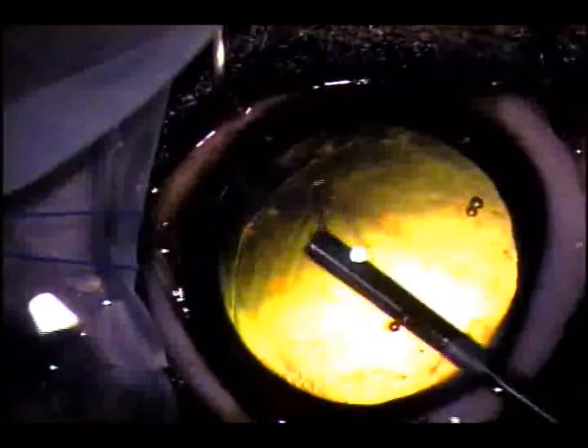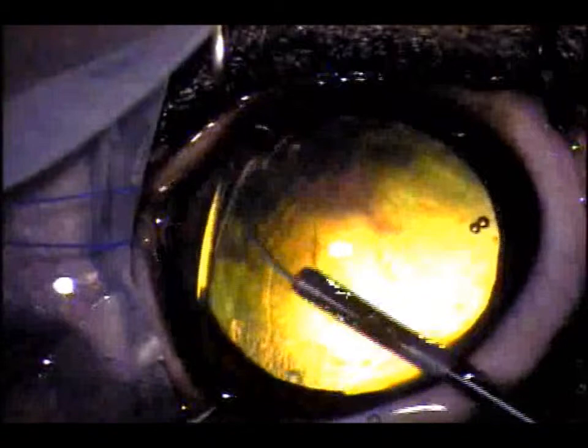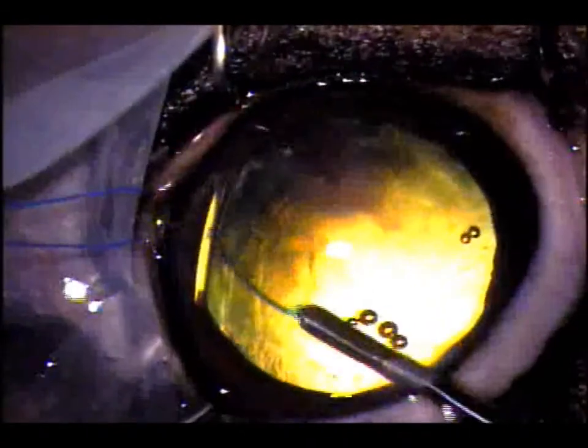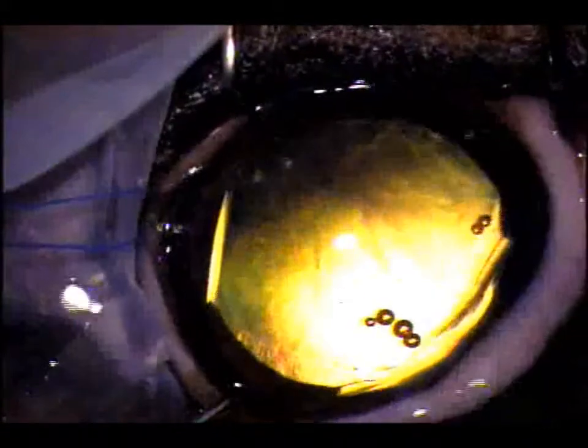For this we implant a capsular tension ring, which is an intraocular device, a ring of acrylic essentially that expands into the lens capsule peripherally and provides 360 degree tension around the lens capsule to keep it in place.